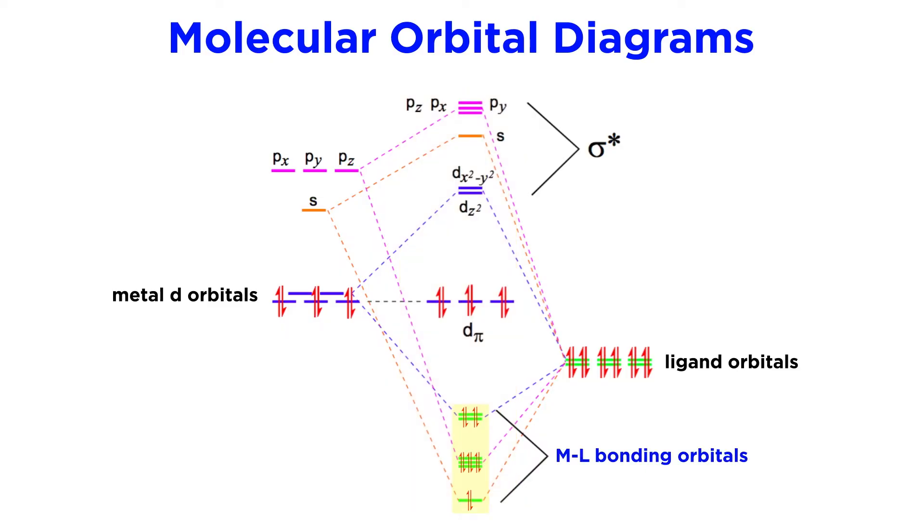Down low we have the ML bonding orbitals. These get filled first with the electrons donated by the ligands. Then we have the d pi orbitals, which will hold the metal's d electrons, so these constitute the highest occupied molecular orbitals, or HOMO. Then above that we have the unoccupied molecular orbitals, starting with the remaining d orbitals. This dz squared orbital tends to be the lowest unoccupied molecular orbital, or LUMO, so we will frequently see incoming ligands interacting with this orbital.